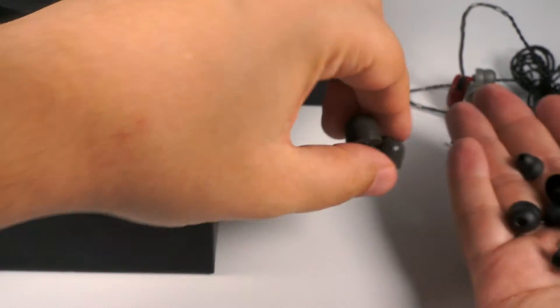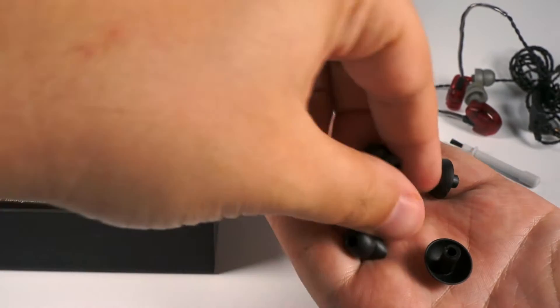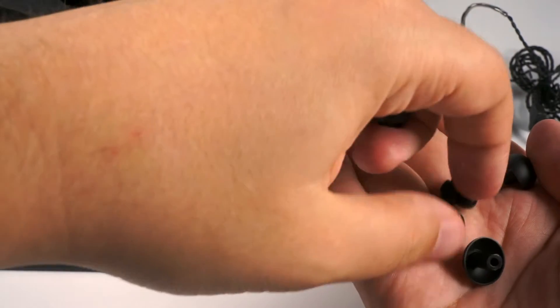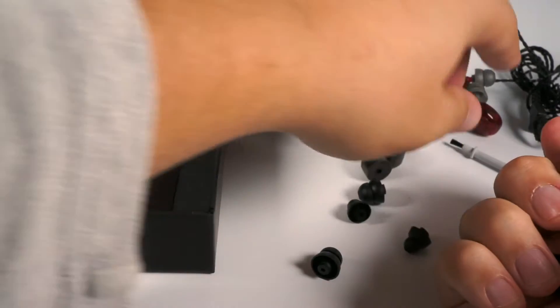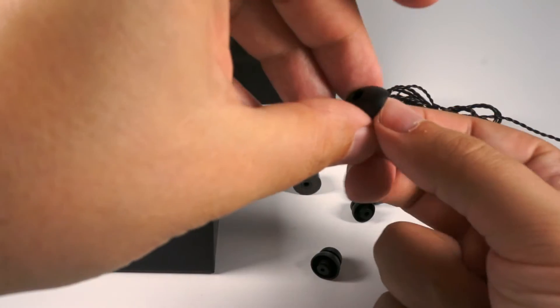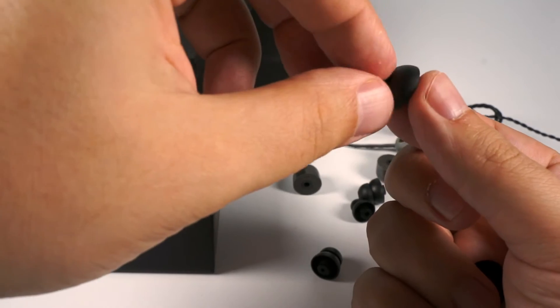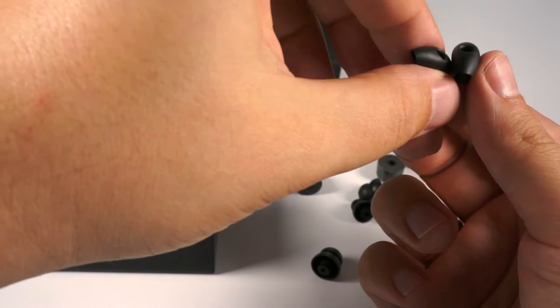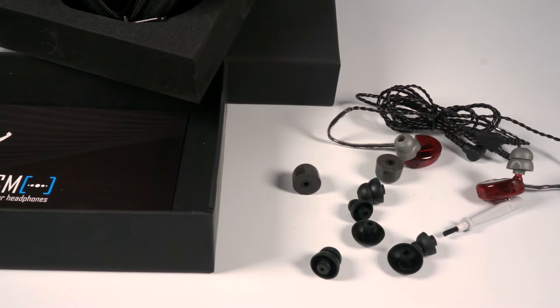So a pair of foams, two different double flange tips - wider one and narrower one - and also a pair of double flange tips attached here. And as you can see, pretty unusual tips, single flange with flange moved forward. So for those who like to have not so deep insertion. So accessory set is pretty normal.